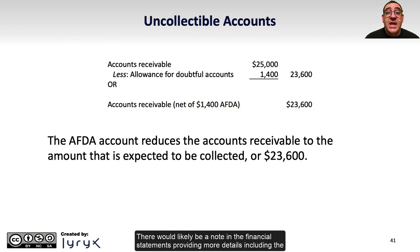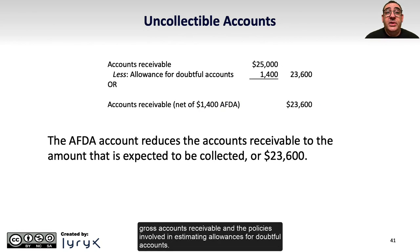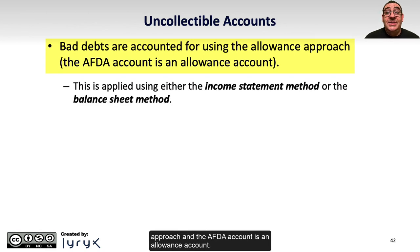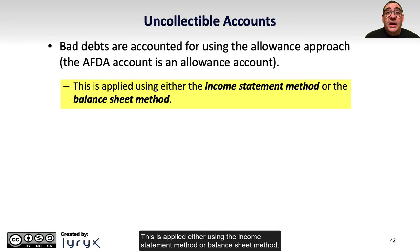There would likely be a note in the financial statements providing more details, including the gross accounts receivable and the policies involved in estimating allowances for doubtful accounts. Bad debts are accounted for using the allowance approach, and the AFDA account is an allowance account.